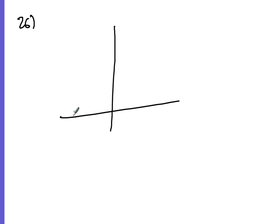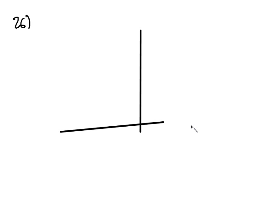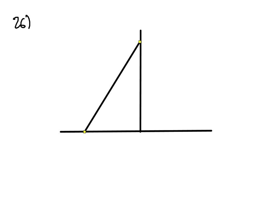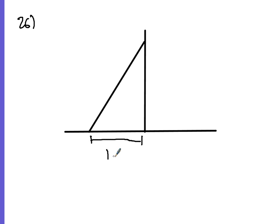Finally, question 26: a ladder is 6 metres long, placed on horizontal ground resting against a vertical wall. The instructions say the bottom of the ladder must not be closer than 1.5 metres from the wall. How far up can the ladder reach? We have a right-angled triangle. The ladder is the hypotenuse at 6 metres, and the base is 1.5 metres.